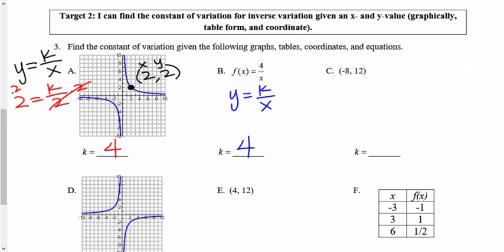For C, they give me an x and a y coordinate. So I'm going to plug that into my y equals k over x. So I'm going to say that 12 equals k over negative 8. Now to get that k by itself, I have to multiply it by my denominator. And you might need your calculator for this one, but k equals negative 96. Big number.